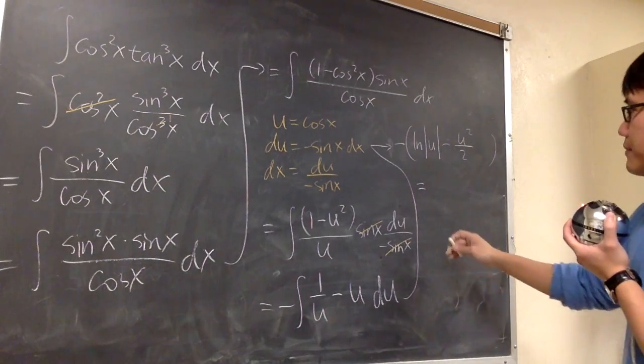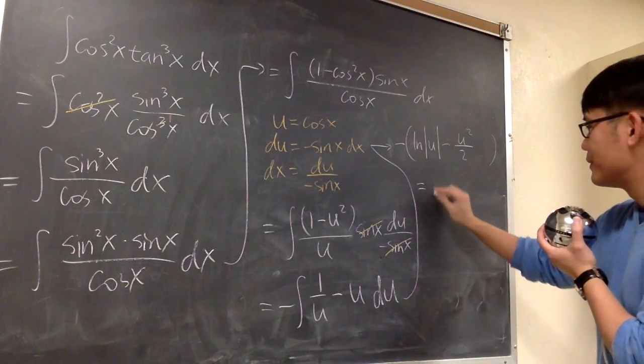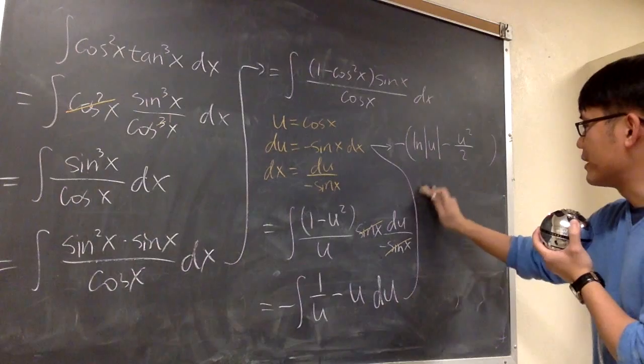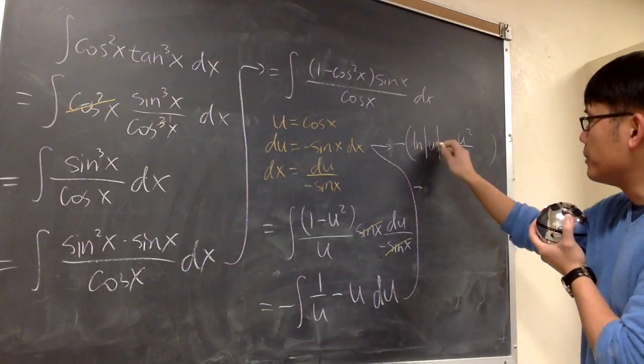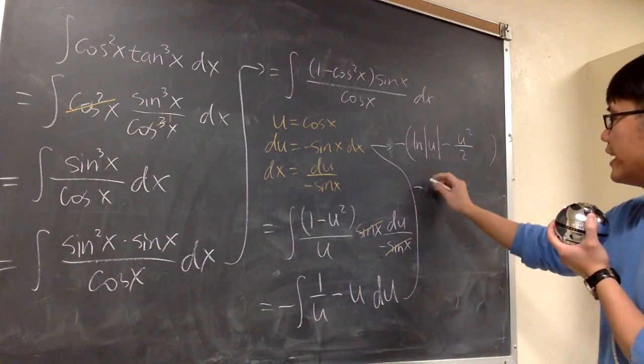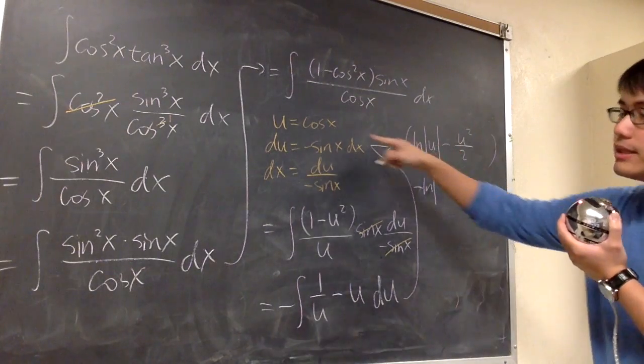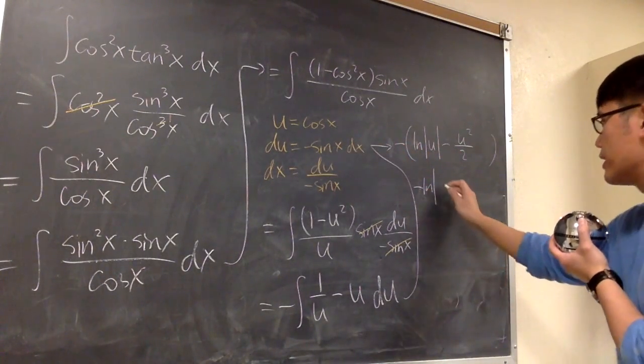This is going to be minus, well, let me just write it down right here. Distribute the negative into the parentheses, we have negative ln absolute value, the u is cosine x. So I'll just write down cosine x right here.